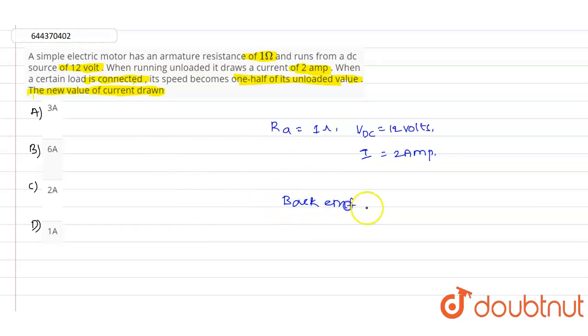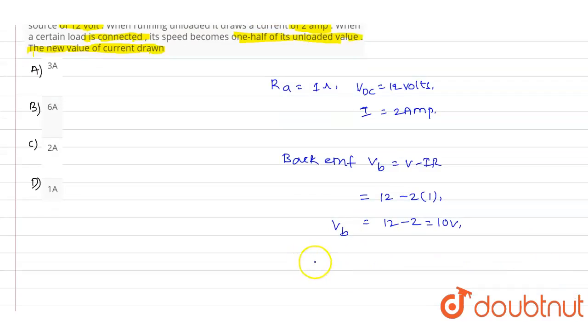Back EMF value Vb equals V minus I into R. So the back EMF value will be 12 minus 2 into 1, where the value of V is 12 and the value of current is 2, and the value of resistance is 1. So we will get 12 minus 2, which equals 10 volts. This is the value of the back EMF Vb.